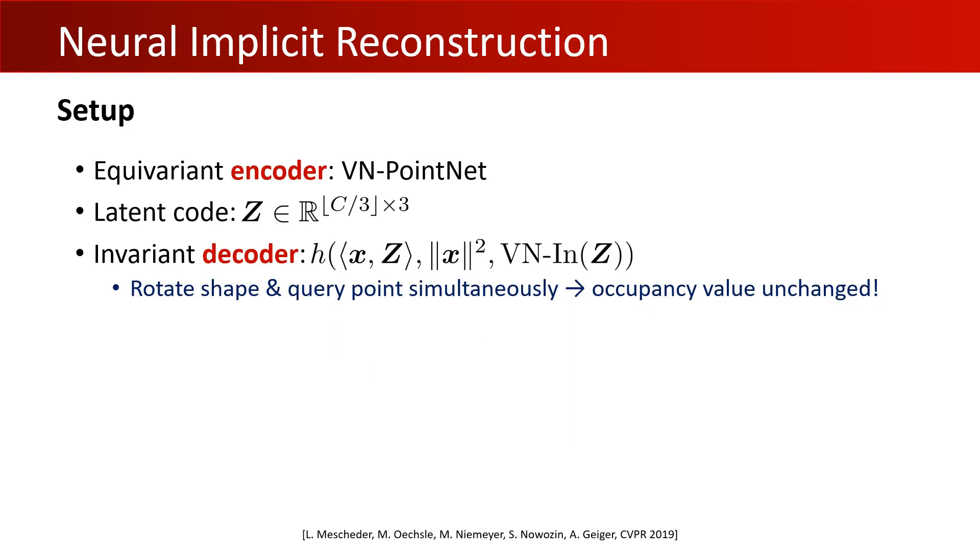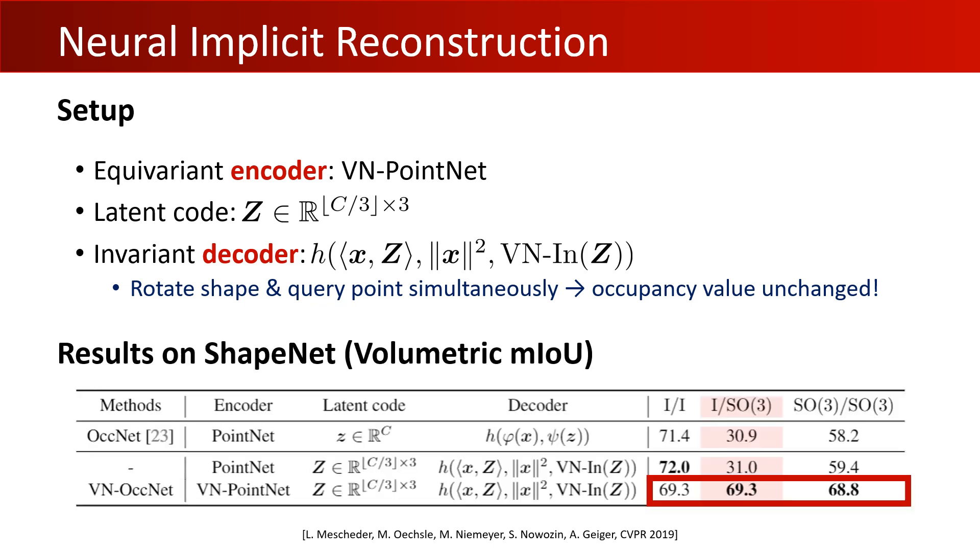Finally, we show our results in neural implicit reconstruction, where we follow the experimental settings from OccNet. For the equivariant framework, we adopt the VN-PointNet encoder, a global vector-list feature z, and a decoder applied to the invariant features between z and the query point x. Instead of data augmentation with arbitrary rotations, here we train with no rotation, denoted by I. Compared with the original OccNet, our VN-OccNet shows excellent coherence in reconstructing shapes in any poses, with a minor loss in accuracy in the I/I case.